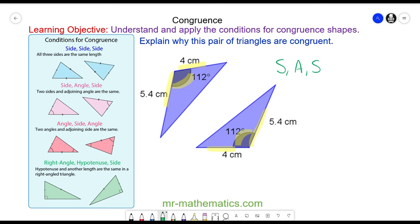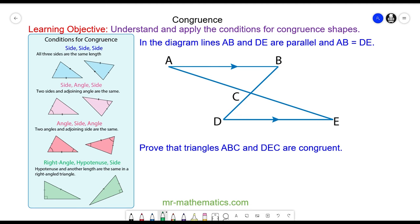We'll try one more question which is slightly more complicated. In the diagram, lines AB and DE are parallel, and AB, which is this side, is equal to DE, which is this side. So the two parallel sides are parallel and they are equal. Prove that triangles ABC and DEC are congruent.